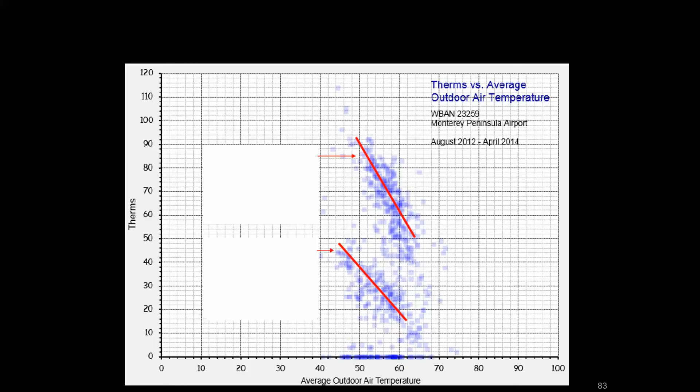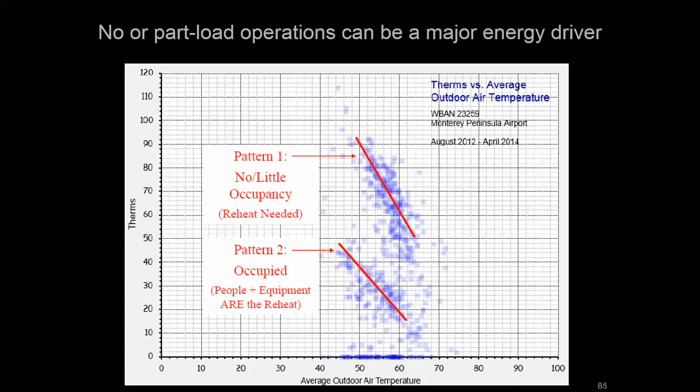One of the tricks that we have to try to determine these things up front is we can do things like plot energy data on something like outside air temperature instead of a time series chart. This is actually one of those charts of a conference space where we're looking at daily therms, daily gas usage, versus daily outside air temperature. You might expect a single plot line - as it gets colder, you use more gas, more space heat is happening. But in this case, you might see that you have two trend lines. It turns out what was happening here was that there was two patterns. There was one pattern where we were at the occupied state, and the people and the equipment were providing that zone load, and there was less reheat needed. And then that top trend was where there was really no or little occupancy, and that reheat was basically providing the zone load to keep the thermostat happy.